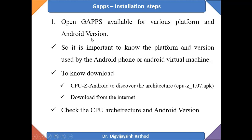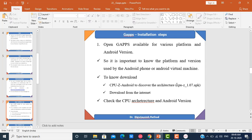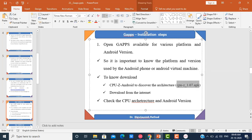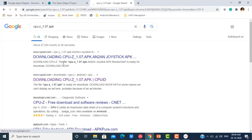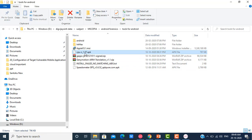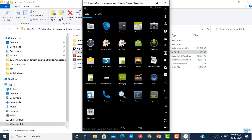The Google Open GApps are available for various platforms and Android versions, so it is important to know the platform and version used by your Android phone or Android Virtual Machine. To find out which Android version and CPU architecture your emulator is using, you can download the CPU-Z Android application. I have downloaded the CPU-Z APK, which you can download from the internet.